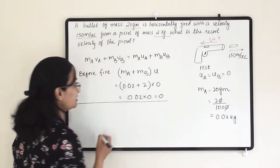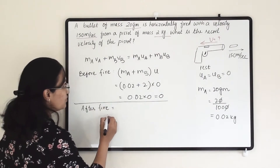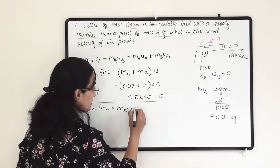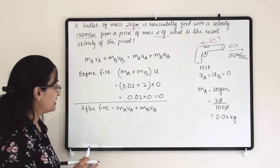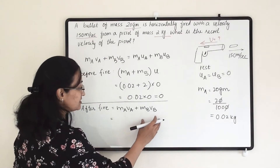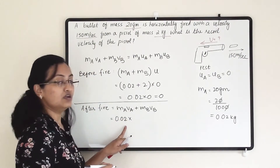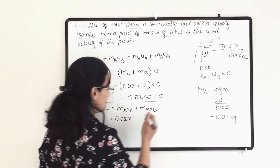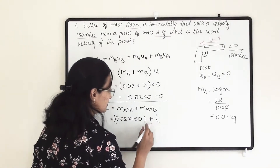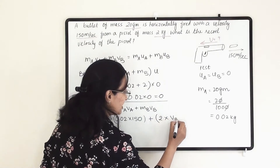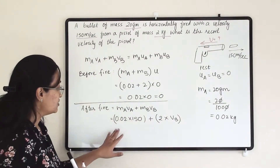Now let us calculate the after-fire situation. After fire it is: MA·VA + MB·VB. For the bullet: mass is 0.02 kg and after fire it gains 150 m/s velocity. For the pistol: mass is 2 kg and we need to find its recoil velocity VB. So we have the after-fire momentum expression ready.